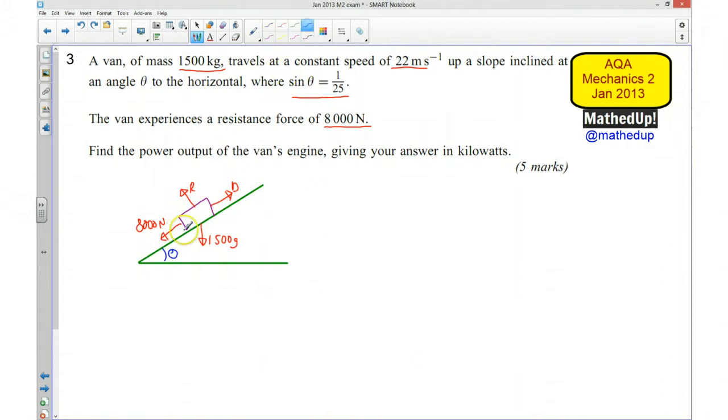I've got my driving force, and because it's in equilibrium—traveling at a constant speed of 22 meters per second—my driving force equals the forces acting against it. So my driving force equals 8000, which is the resistance force,